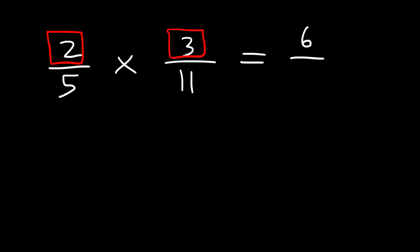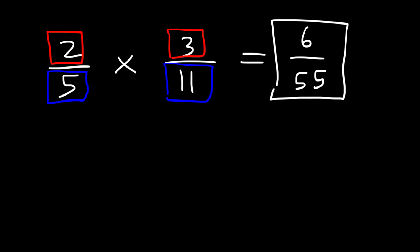Now let's try another example. Go ahead and multiply these two fractions: 2 over 5 times 3 over 11. So once again we're gonna multiply across. 2 times 3 is 6. And then we're gonna multiply 5 and 11. 5 times 11 is 55. And so this is the answer. We can't simplify this answer.